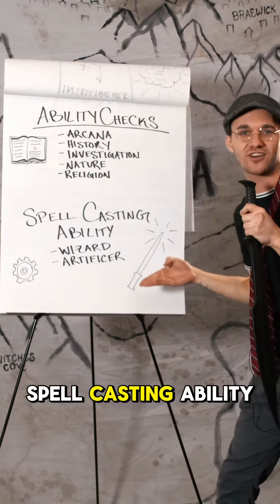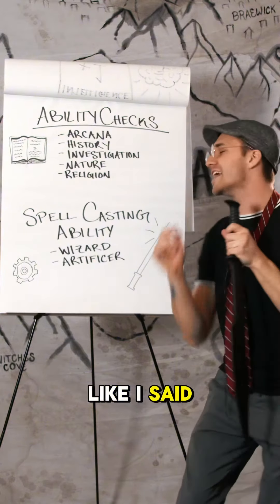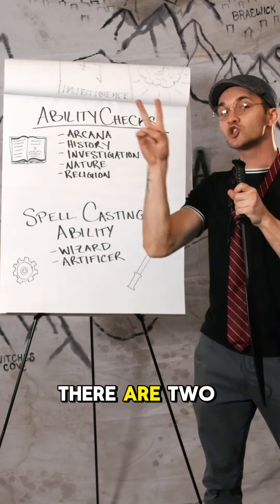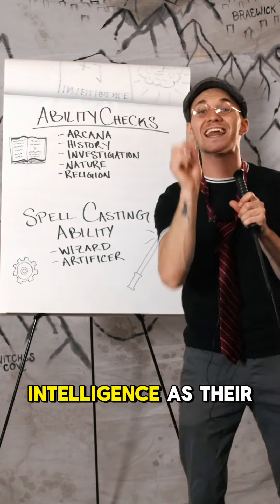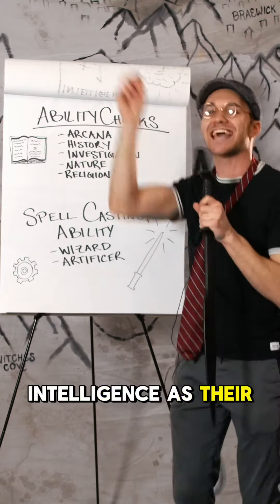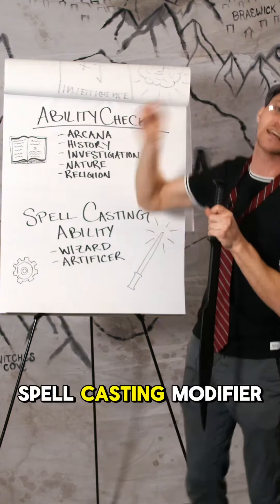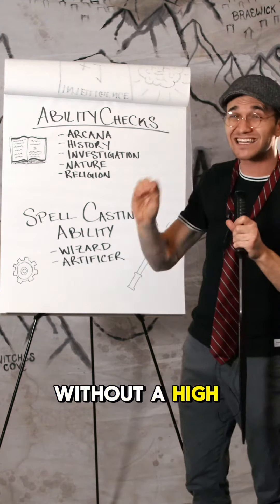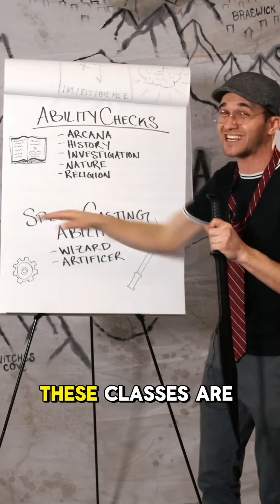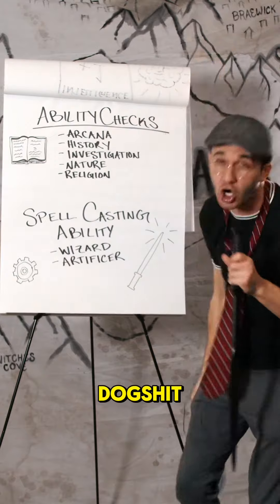Spell casting ability. There are two classes that use intelligence as their spell casting modifier. Without a high intelligence score, these classes are dog shit.